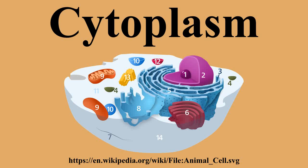The cytoplasm is about 80% water and usually colorless. It is within the cytoplasm that most cellular activities occur, such as many metabolic pathways including glycolysis, and processes such as cell division. The concentrated inner area is called the endoplasm and the outer layer is called the cell cortex or the ectoplasm.